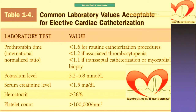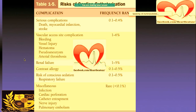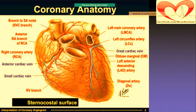Interventional cardiology is an interventional procedure, so complications may happen. The most common complication is local vascular access problems. Other complications include contrast allergy, renal failure, infections, perforations, nerve injury, and pulmonary embolism. As you may see beautifully in this diagram, these are the different coronary arteries and also the veins.